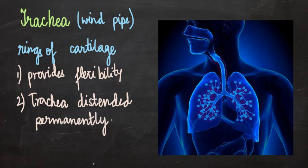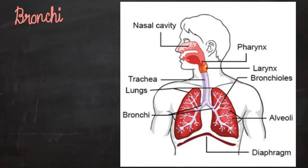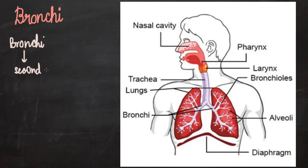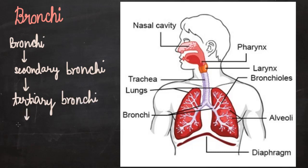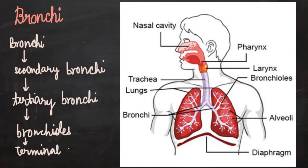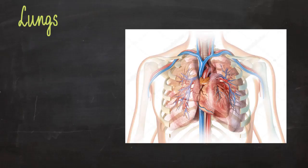Air then passes into the bronchi, where the windpipe divides into two branches. These bronchi further divide into narrower passages: secondary bronchi, which divide into tertiary bronchi, which then divide into bronchioles. The bronchioles keep dividing, and the terminal bronchioles have tiny balloon-like structures on them known as alveoli. The alveoli are the functional unit of the respiratory system.